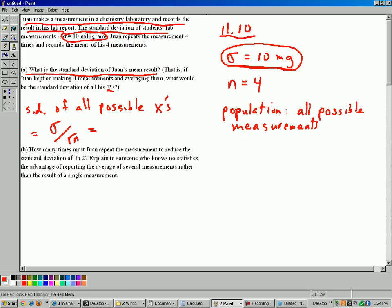is equal to sigma over square root of n. Okay, in this case sigma is 10. Square root of n, well n is 4. So square root of 4 is 2, so it's 10 divided by 2, which is 5. And that's the units for milligrams there. So 5 milligrams is the answer to part A.